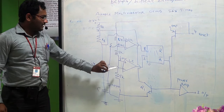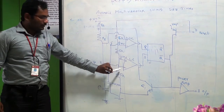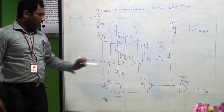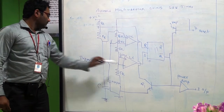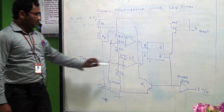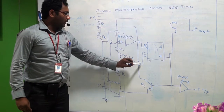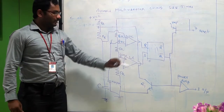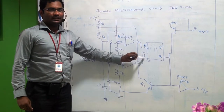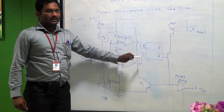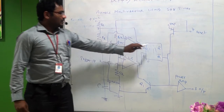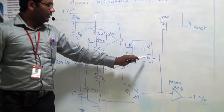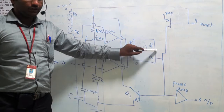When 1/3 Vcc is greater than the inverting input terminal of the lower comparator, the output of the lower comparator is high. It means that it sets the control flip-flop. Set means that the output of the control flip-flop is Q equal to 1 and Q-bar equal to 0.